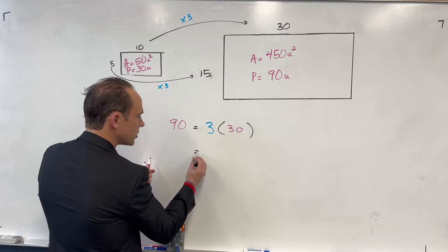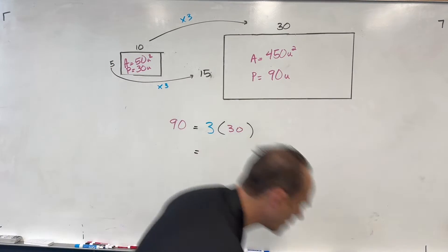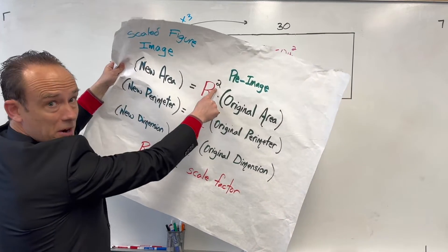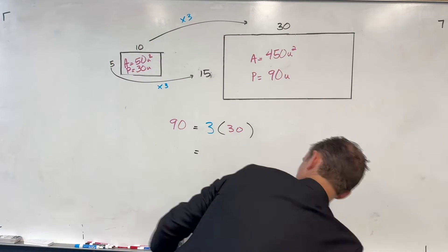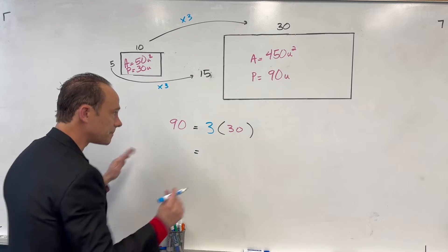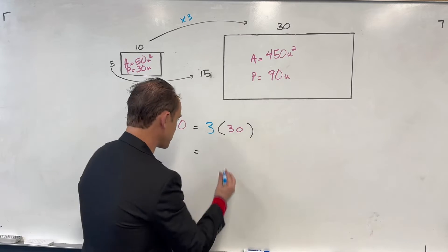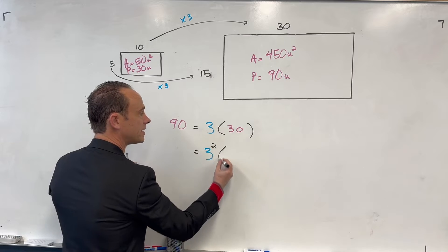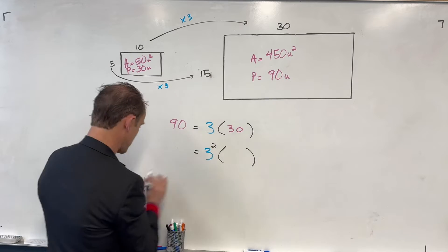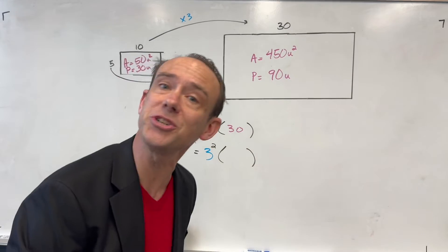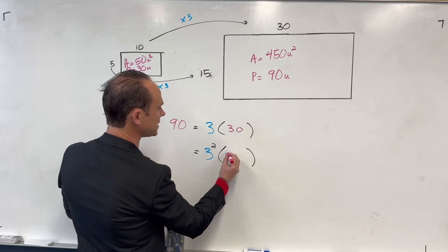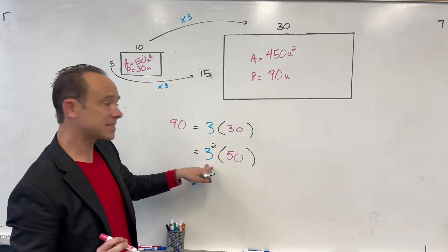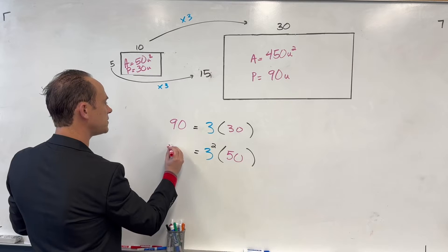Area moves with the square of the scale factor. Scale factor is 3, so I square it: 3² = 9. Multiply that by the original area of 50: 50 × 9 = 450. That's the new area.